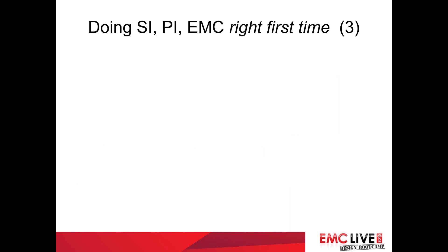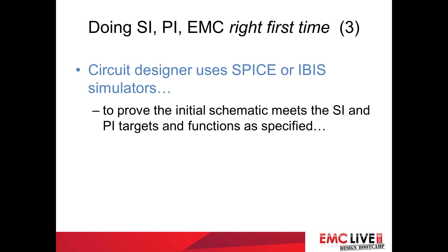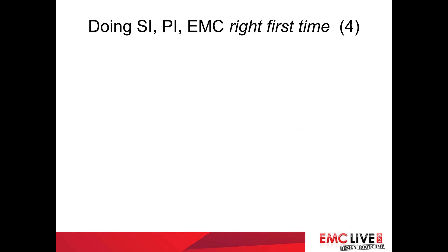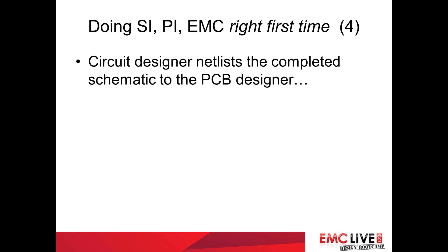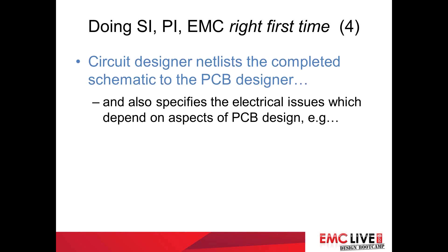So let's see how this process works. First, the circuit designer uses his SPICE or IBIS simulators to prove the initial schematic meets the signal integrity and power integrity targets, and functions as specified. The main problem here is getting accurate models of new ICs in time — SPICE models are better, but you often don't get them very early on. The circuit designer then sends a completed, simulated schematic to the board designer.